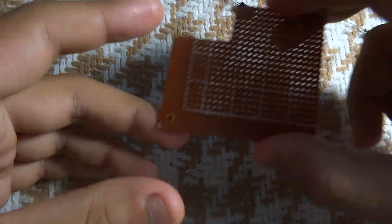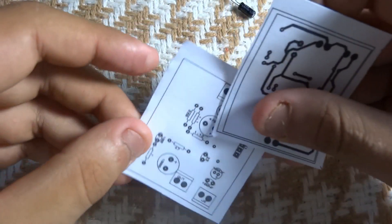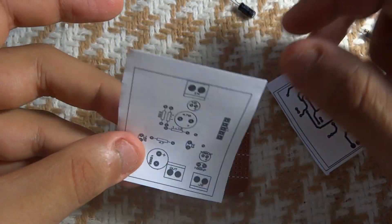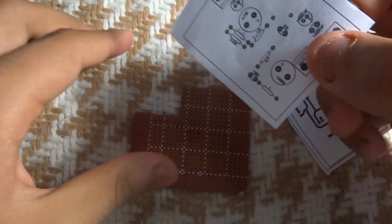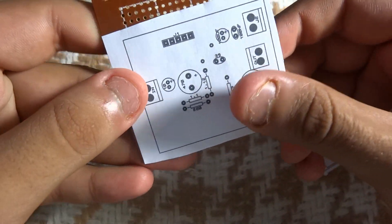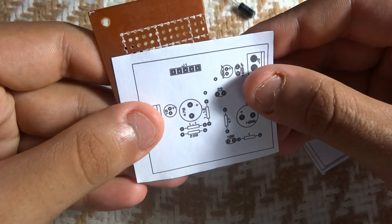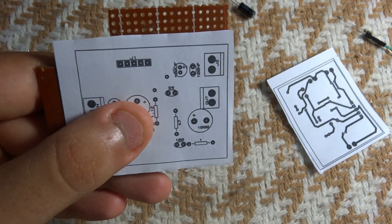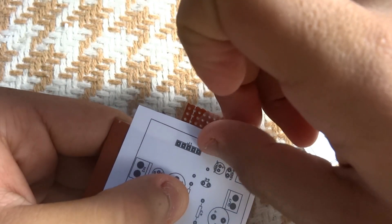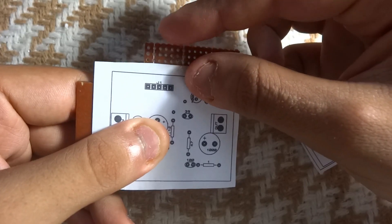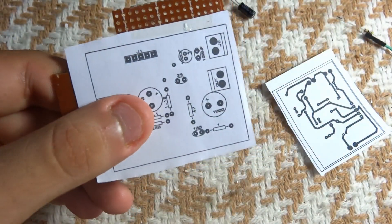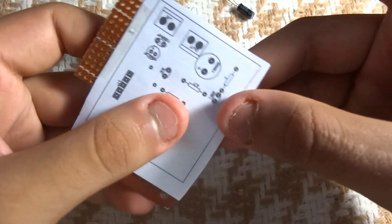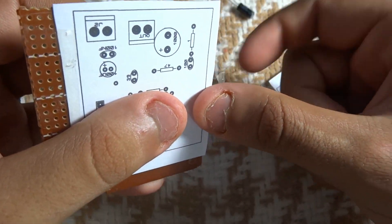Now for start, take your PCB and those two pictures here which you're going to find in a link I will provide in the description. So this would be the top layer, this is the bottom layer. Put it somewhere, let's say somewhere here, and now secure it with some tape so it won't move or bother us.